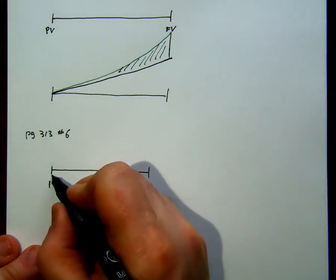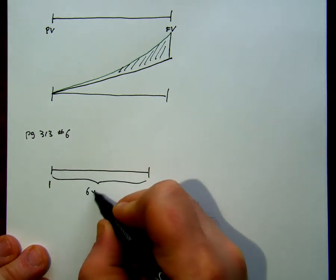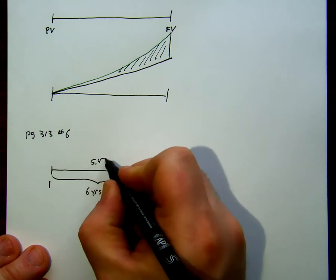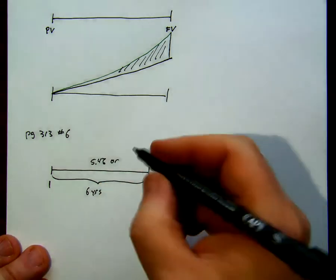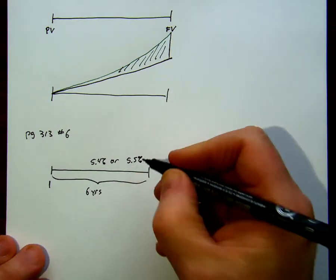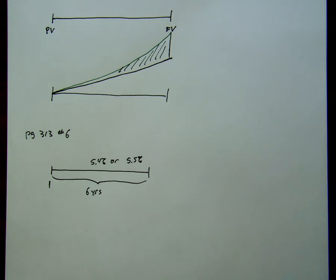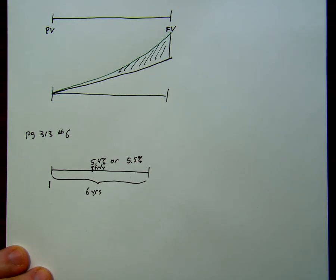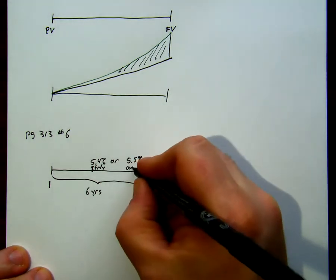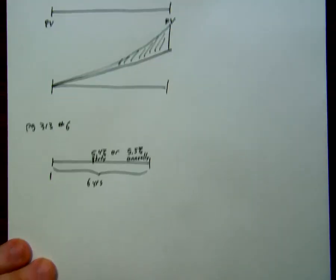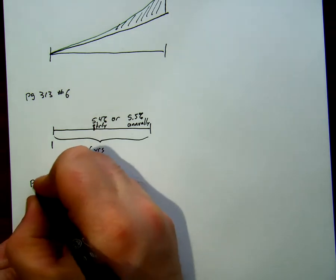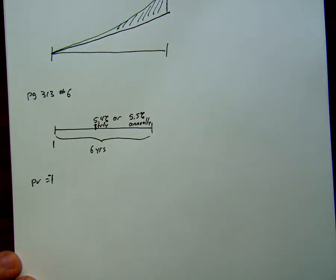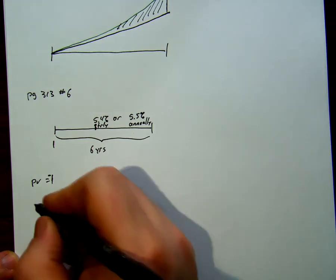We have a choice of either 5.4% or 5.5%. The 5.4%, this is compounded quarterly. And the 5.5% is compounded annually. So we have two options. First of all, our present value is going to be $1. Let's make that a negative $1 because we're doing an investment. And then, we're going to have to change everything else.